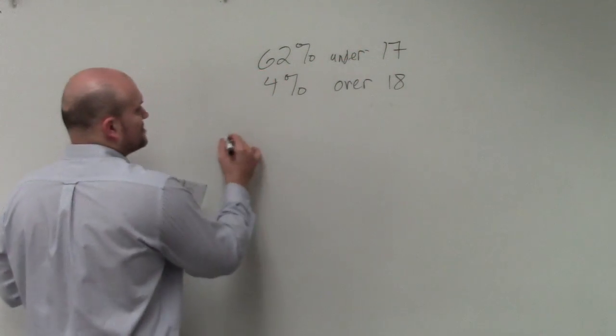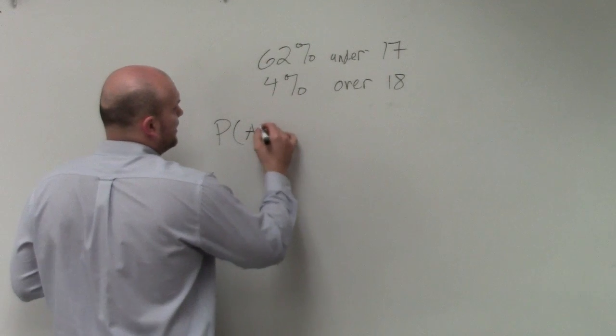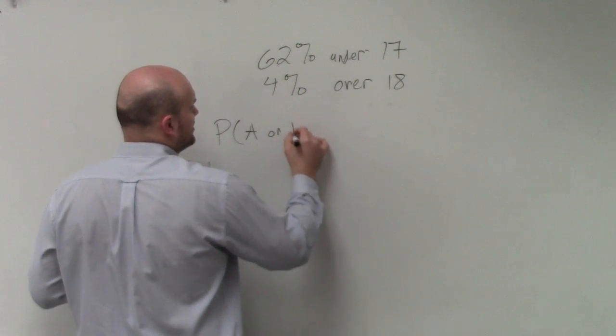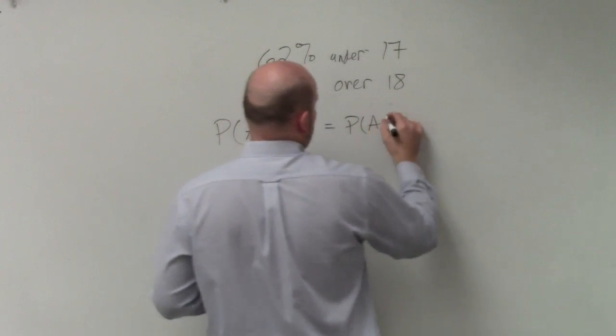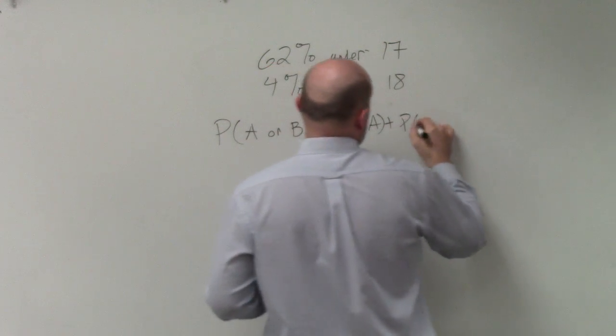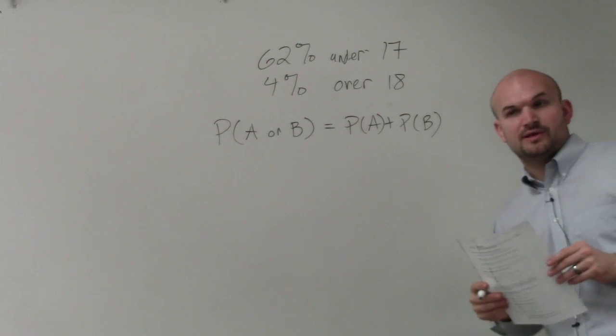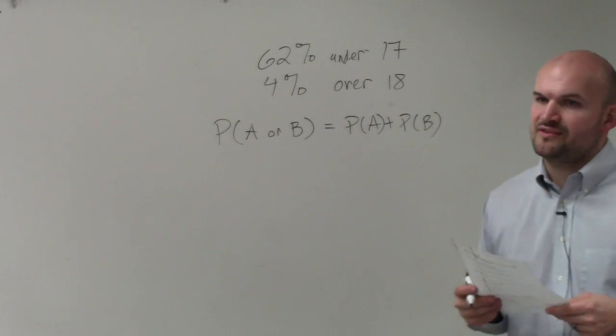And what we talked about as far as mutually exclusive events, is the probability of A or B of mutually exclusive events is P of A plus the probability of B. That was the formula that we went through last class period, when you had mutually exclusive events.